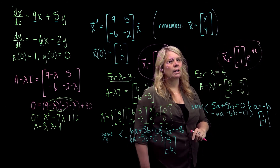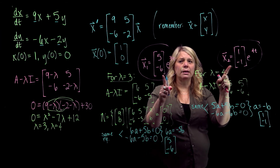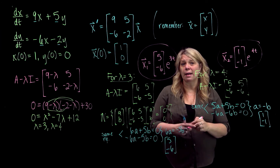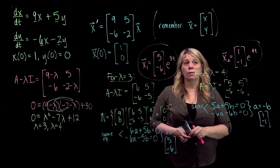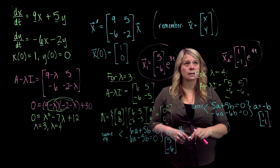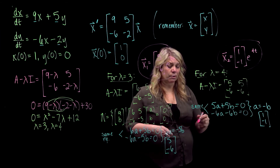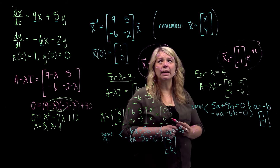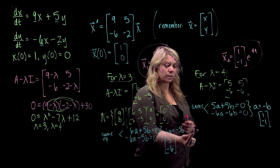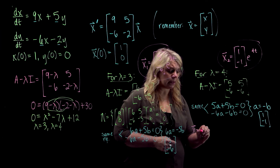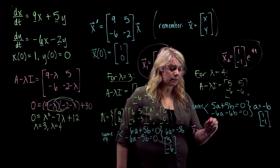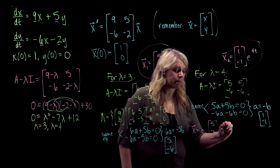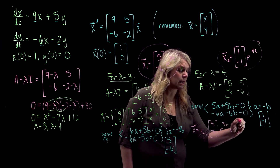These two solutions are linearly independent because I have different lambda values — you can verify that using the Wronskian or the definition of linear independence. From there I can write the general solution in matrix notation: x equals c1 times [5, negative 6] e to the 3t plus c2 times [1, negative 1] e to the 4t.